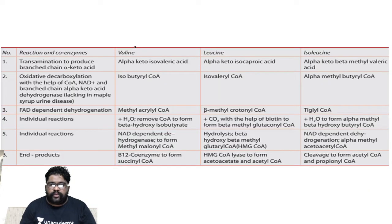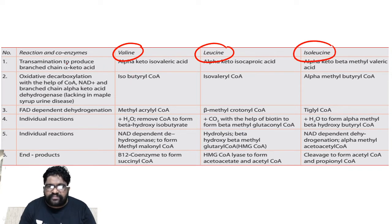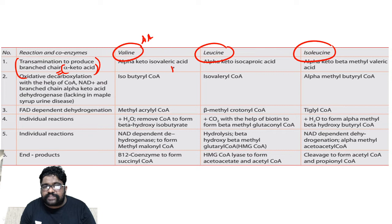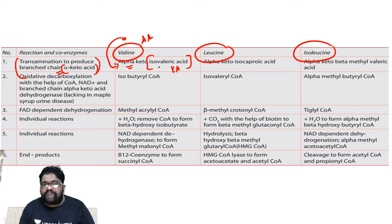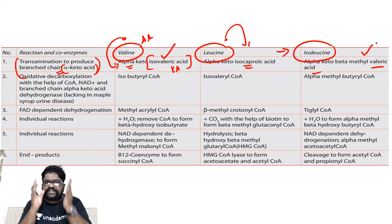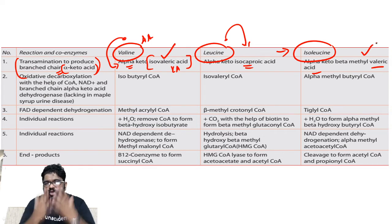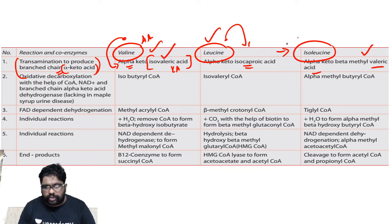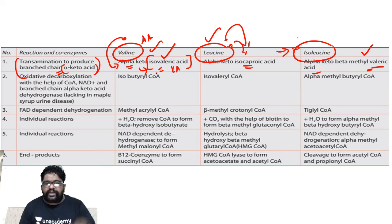Looking at the BCAA metabolic pathway: we start with valine, leucine, or isoleucine. The first step is transamination to produce branched-chain alpha-keto acids. Valine on transamination gives alpha-keto isovaleric acid. Leucine gives alpha-keto isocaproic acid. Isoleucine gives alpha-keto beta-methylvaleric acid. If it is valine it gives isovaleric acid; if leucine, isocaproic acid; if isoleucine, valeric acid with a proper keto group.